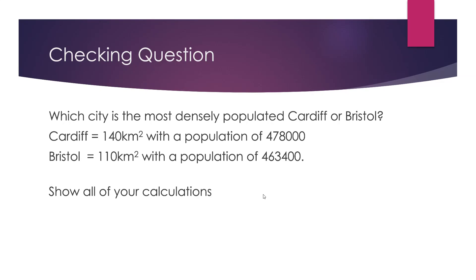Checking question: which city is the most densely populated — Cardiff or Bristol? Cardiff is 140 kilometres squared with a population of 478,000. Bristol is 110 kilometres squared with a population of 463,400. When you're doing this, you need to show all of your calculations so that we can see the comparison between the two. Pause the video and have a go, then press play when you're ready to see the answers.